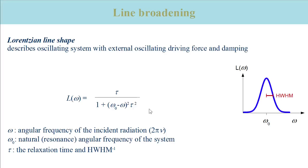To be more specific, the inverse of tau is the half width at half maximum of a Lorentzian absorption band. Thus the width of an absorption band is inversely related to the lifetime of the excited state reached in the transition.